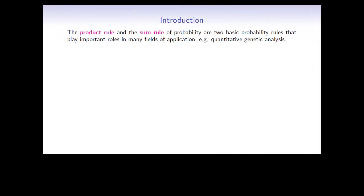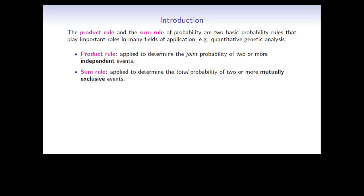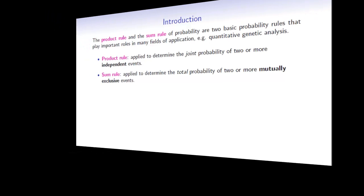In this video we are going to discuss the product and sum rules. These are two basic but important probability rules with a lot of different applications. As a brief summary, the product rule is applied to determine the joint probability of two or more independent events, whereas the sum rule is applied to determine the total probability of two or more mutually exclusive events. Each of these words will be explained in the next few slides.